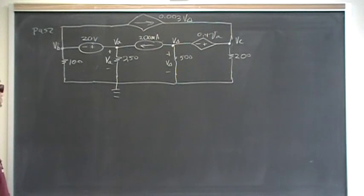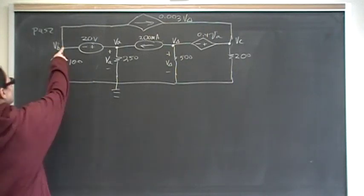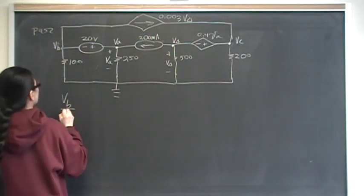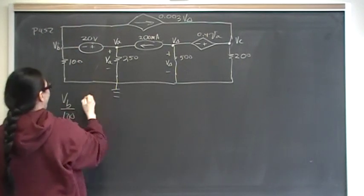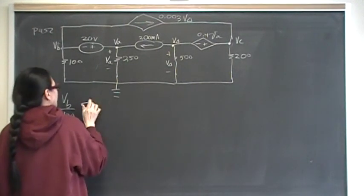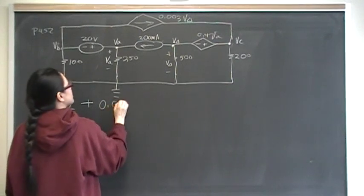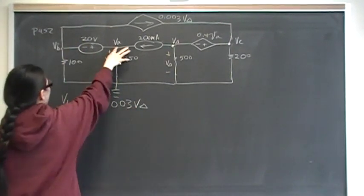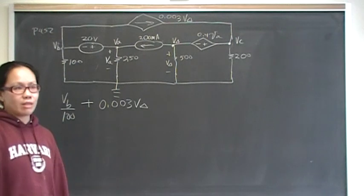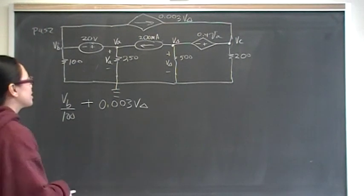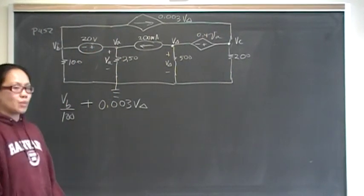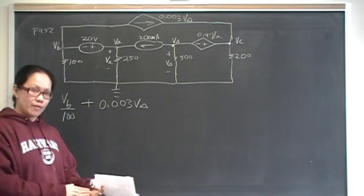Now I start building my node equations. At this node, VB over 100 is that node current. And then over here, this current is going away from the node, so it's plus 0.003 V delta. Then I realized I have two voltages and then another voltage in between with no resistance. When everything you have in your line of sight is nothing but voltages, you have a supernode.